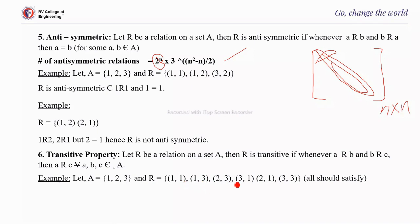Continuing the transitive check: (1,3) and (3,3) — (1,3) must be present, it is. Then (2,3) and (3,1) — (2,1) must be present, it is. Then (2,3) and (3,3) — (2,3) must be present, it is. Then (3,1) and (1,1) — (3,1) must be present, it is. Then (3,1) and (1,3) — (3,3) must be present, it is.